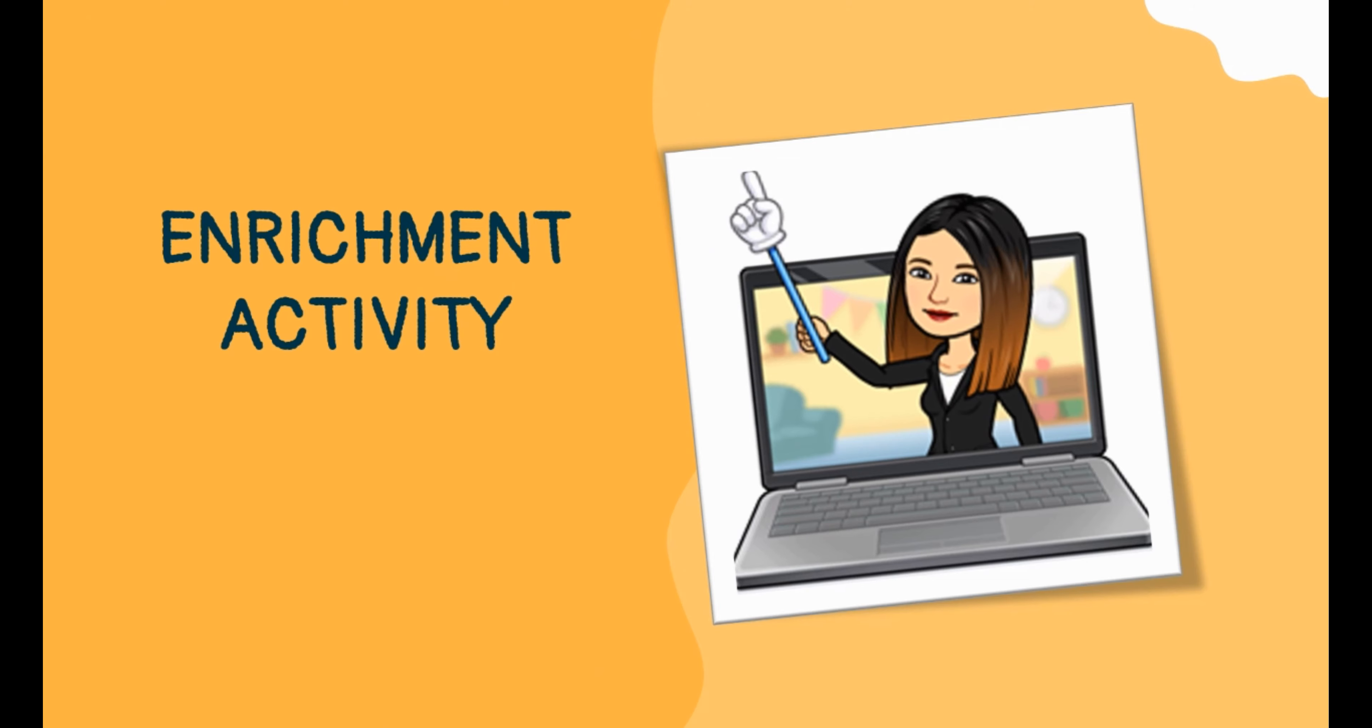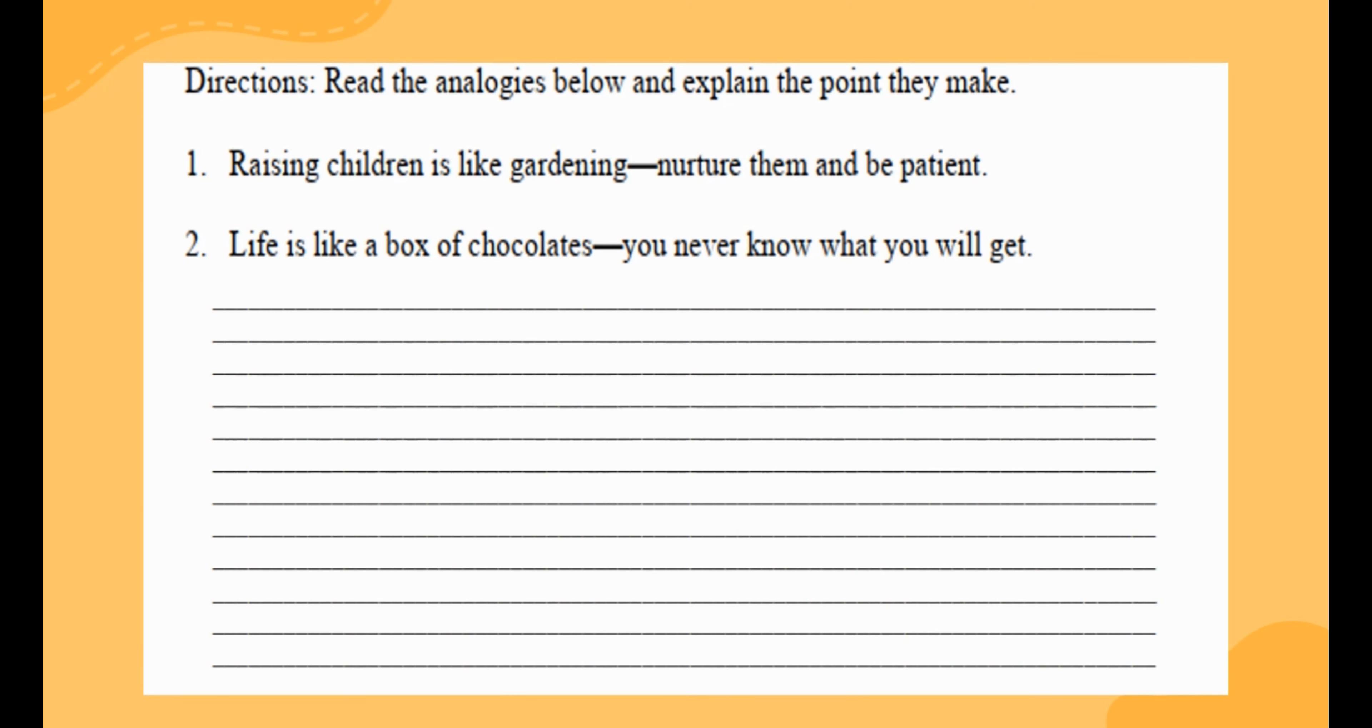Enrichment activity. Read the analogies below and explain the point they make. Number one: raising children is like gardening—nurture them and be patient. Number two: life is like a box of chocolates—you never know what you'll get.